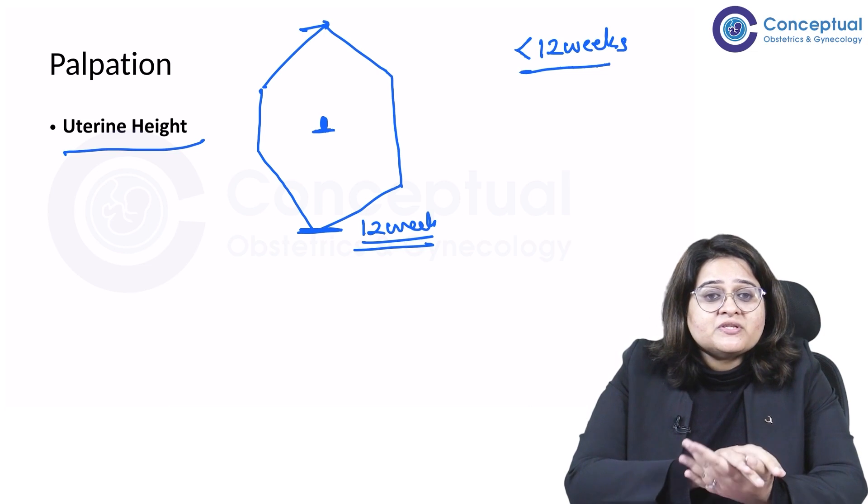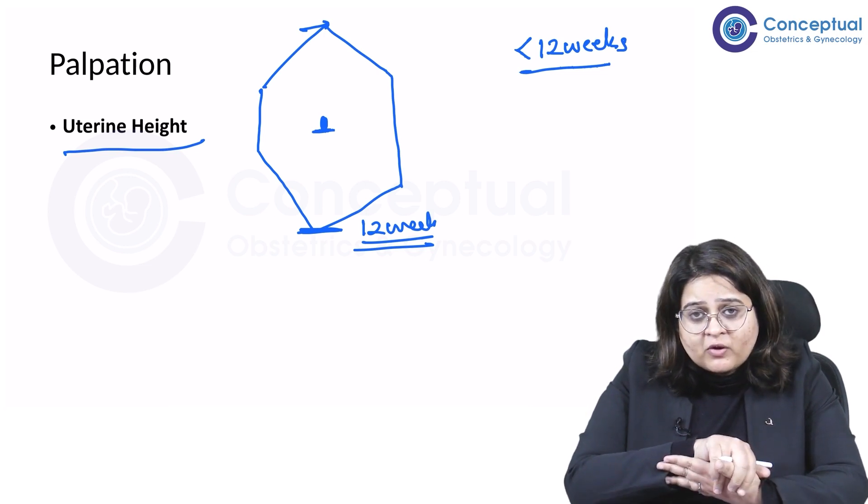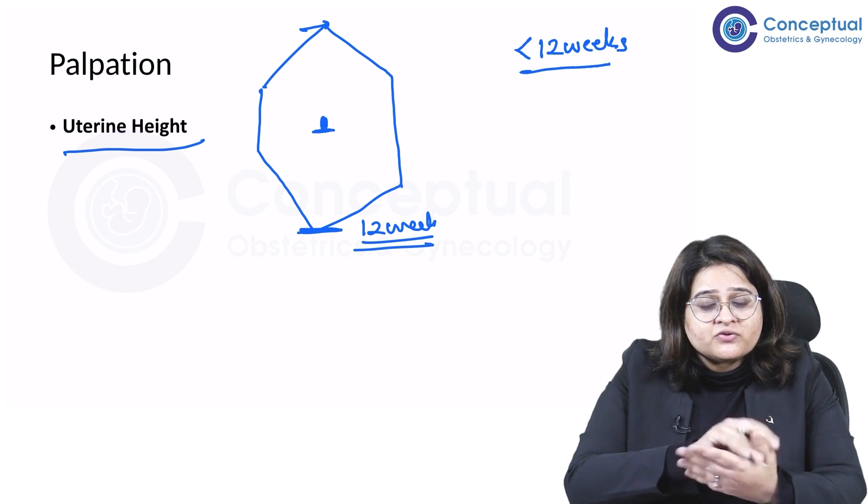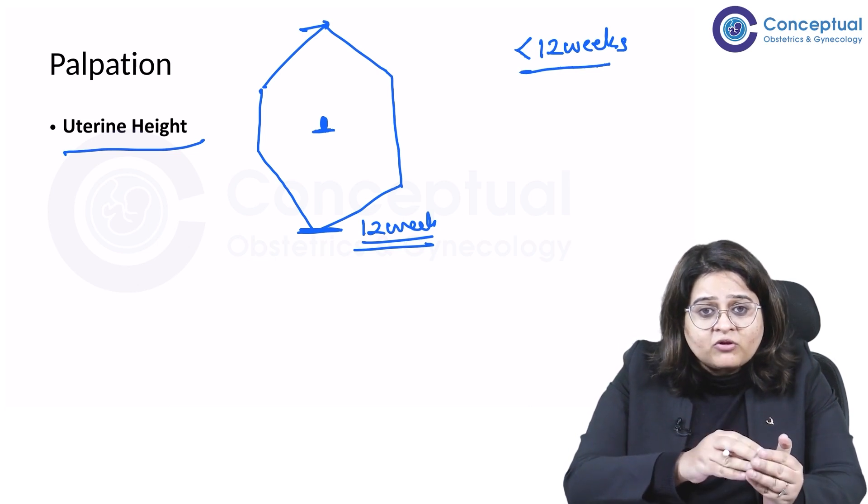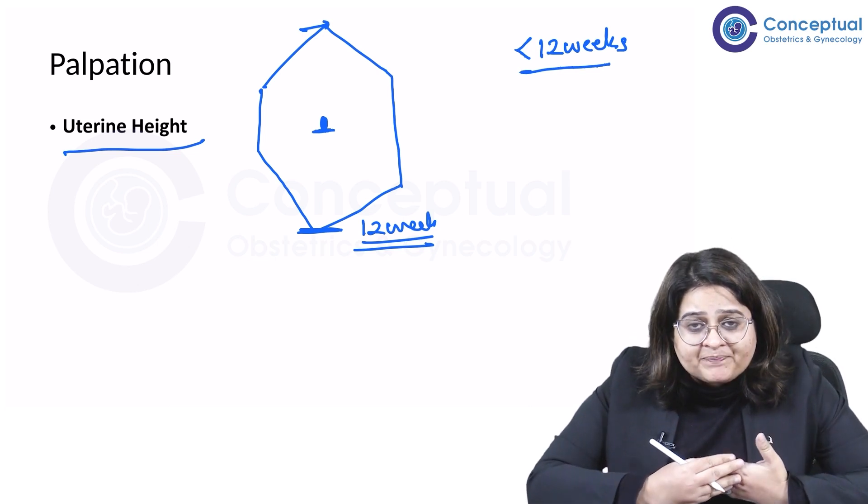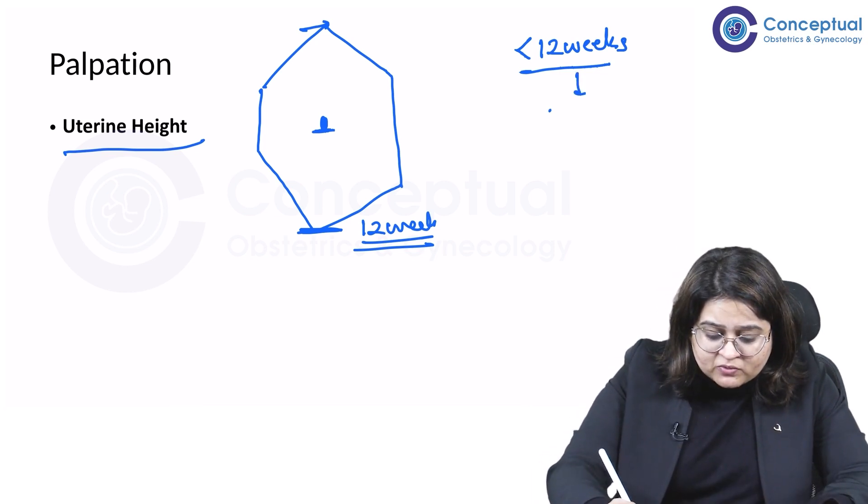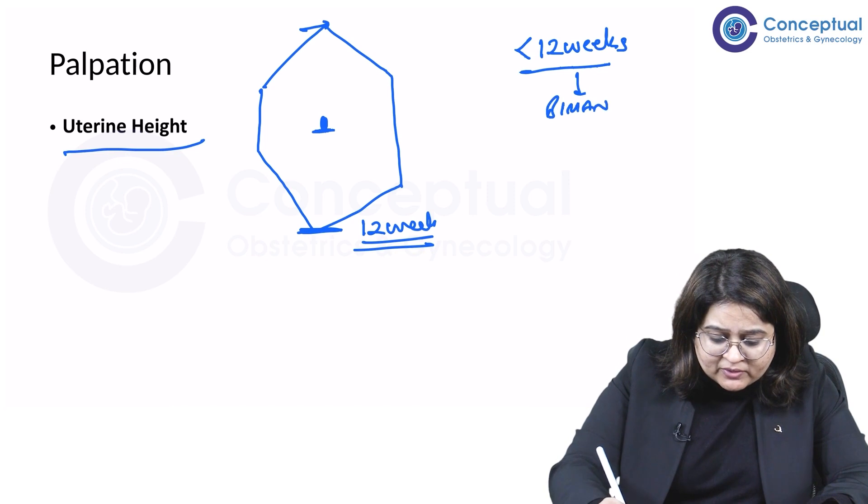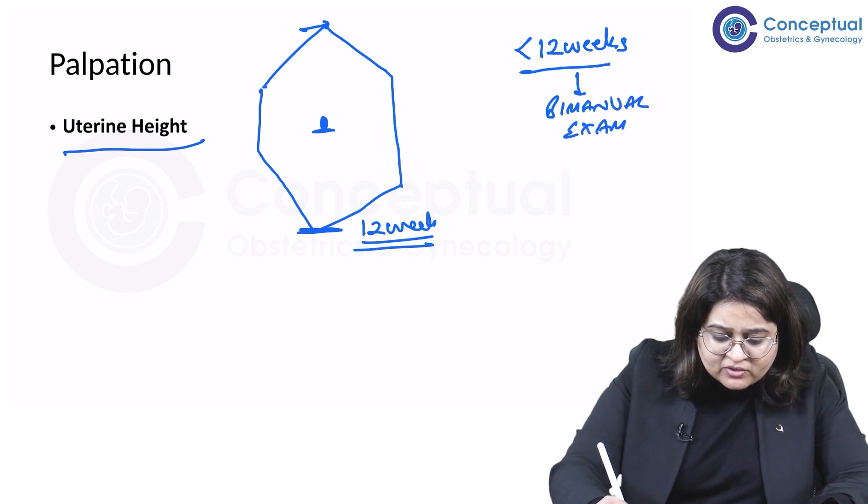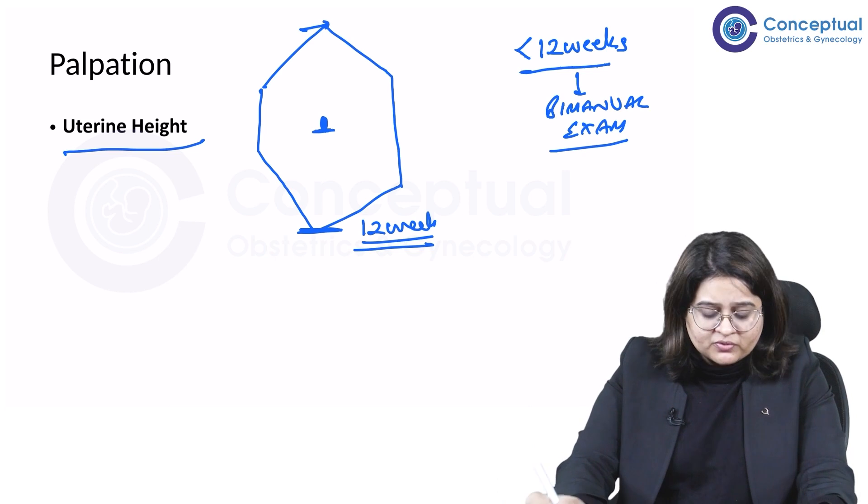When you're talking about a patient, suppose she's less than 12 weeks, your inspection, you're not going to find much. On palpation, you're of course not going to be able to palpate the uterus. Then what's important is your bimanual examination, which we will talk about when we do a vaginal examination.